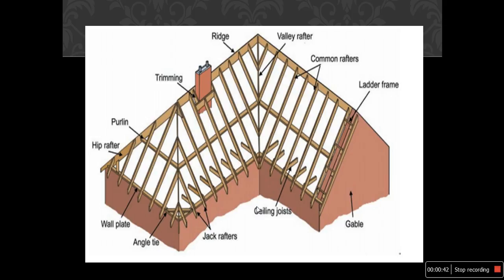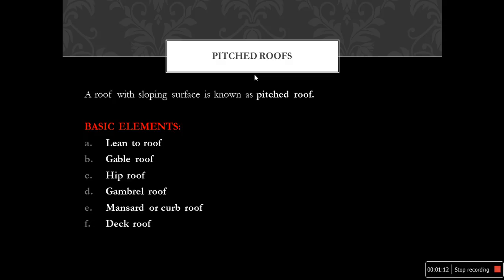In the construction of a pitched roof using timber or wood, the elements include: purlin, which supports the slope of the pitched roof, hip rafter, wall plate, angle tie, jack rafters, ceiling joist, gable, rafter frame, common rafters, valley rafter, and the ridge. So we have seen the different elements in pitched roofs.